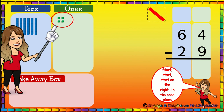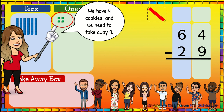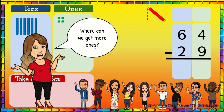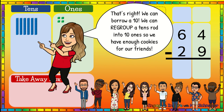To solve this problem, we are going to start on the right in the ones place. We have four cookies and we need to take away nine. Here are our nine friends down here that want a cookie. Do we have enough? No. Where can we get more ones? That's right — we can borrow a ten. We can regroup a tens rod into ten ones so we have enough cookies for our friends.